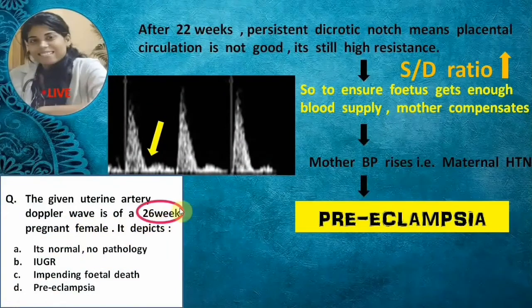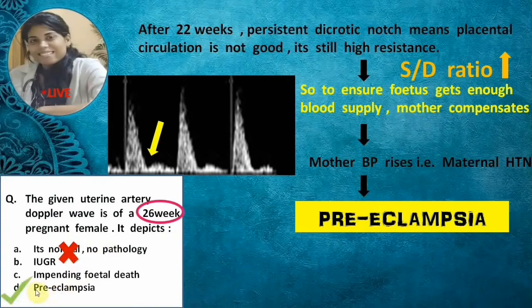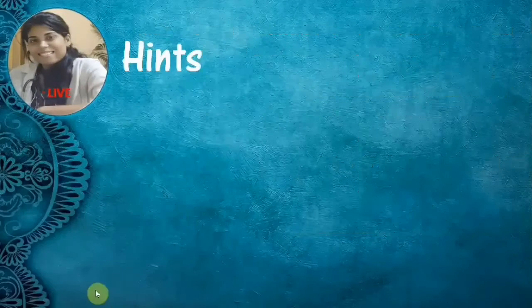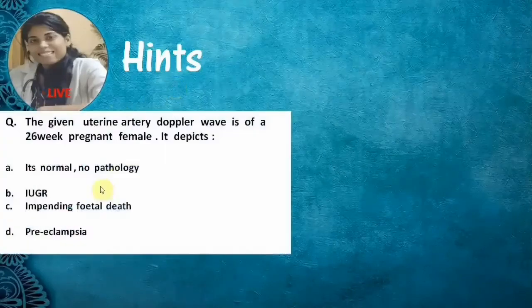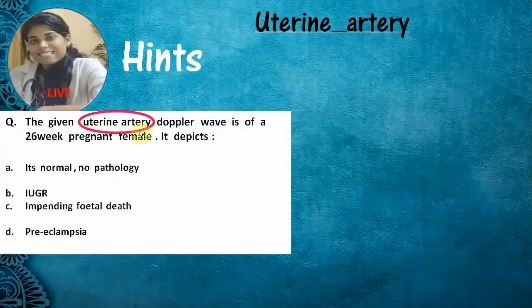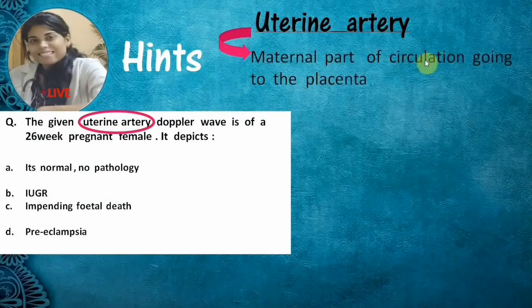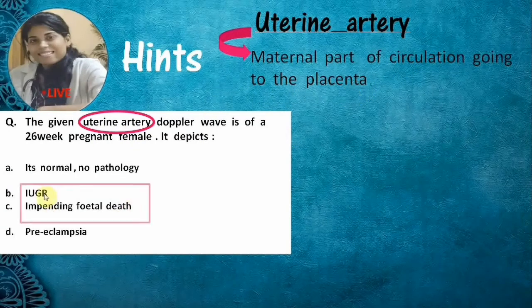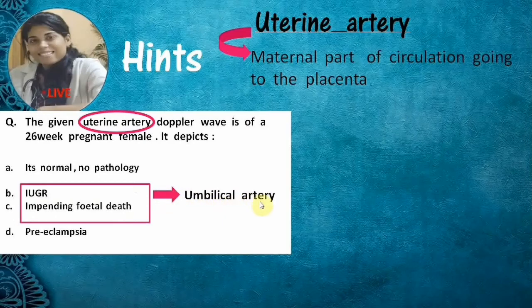The question shows a 26-week patient with this waveform — this is definitely not normal, so the answer is preeclampsia. Note that the question asks about uterine artery Doppler, which reflects maternal circulation going to the placenta. For options B and C — IUGR and impending fetal death — we generally look at umbilical artery Doppler to assess fetoplacental blood flow.